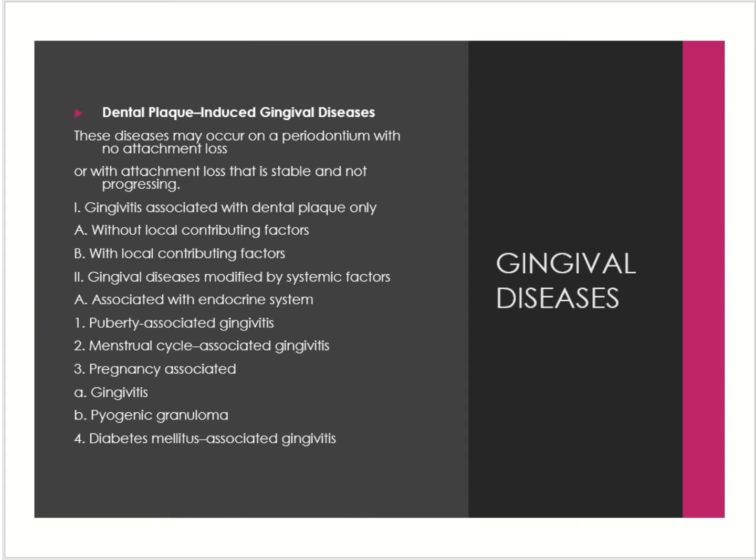These systemic factors are commonly puberty, menstrual cycle, pregnancy, and diabetes mellitus, or it could also be those associated with blood disorders. Blood disorders include leukemia, iron deficiency anemia, and things of that sort.